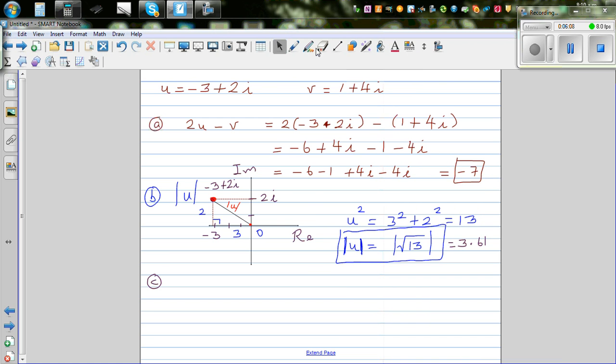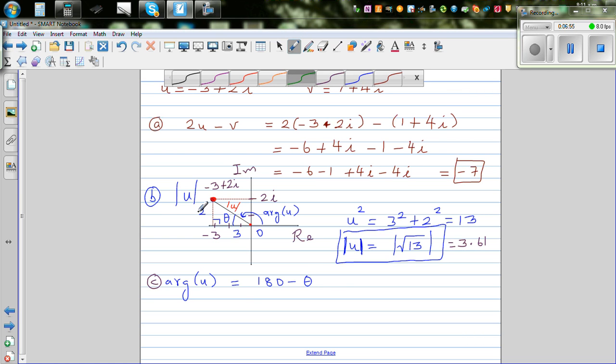In some books they write like this: you want to find the argument of u. Argument of u is this angle. To find argument of u, let's call this theta. Argument of u would be 180 minus theta, because this angle is 180. From 180 we take away theta. If you find this angle, this will give you this angle. Using SOHCAHTOA, this is your opposite and this is your adjacent.